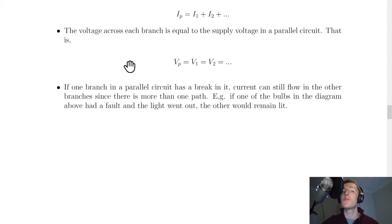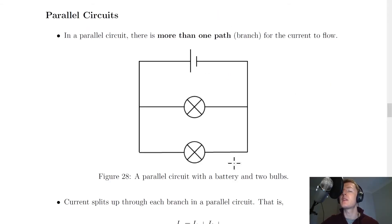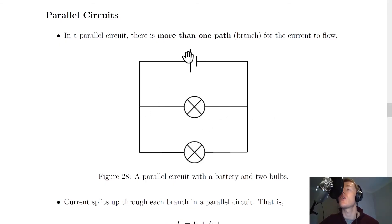The second circuit rule for parallel circuits involves voltage. This says that the voltage across each branch is equal to the supply voltage in a parallel circuit. That is, VP — the voltage in a parallel circuit — is equal to V1, which is equal to V2, and so on. So the voltage across each branch must equal the voltage across the battery. However, if there is more than one component on a branch, the voltage will split up across those components, but the total voltage on that branch should still equal the voltage across the battery.